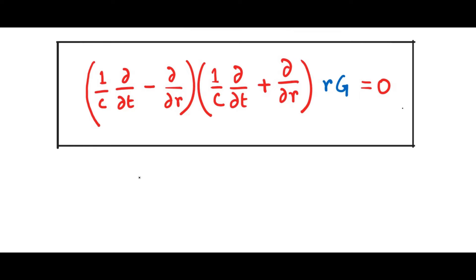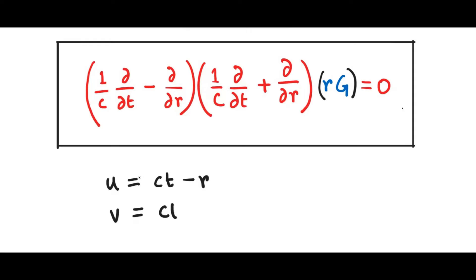This equation can be solved very easily if we make a clever change of variable — and it is sort of obvious just from looking at this operator acting on the object inside. So what do we do? We take the variable u to be defined as ct minus r, and we take v to be defined as ct plus r.